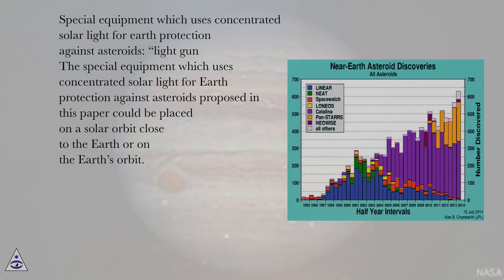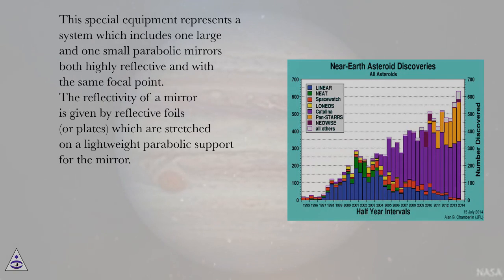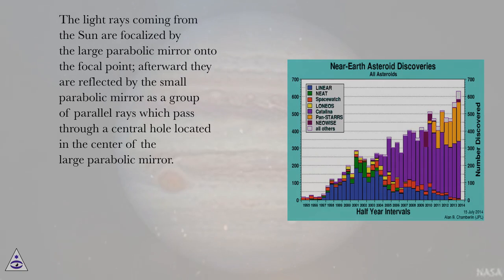The special equipment which uses concentrated solar light for earth protection against asteroids proposed in this paper could be placed on a solar orbit close to the Earth or on the Earth's orbit. This system includes one large and one small parabolic mirror, both highly reflective and with the same focal point. Light rays coming from the sun are focalized by the large parabolic mirror onto the focal point, afterward reflected by the small parabolic mirror as a group of parallel rays which pass through a central hole located in the center of the large parabolic mirror.